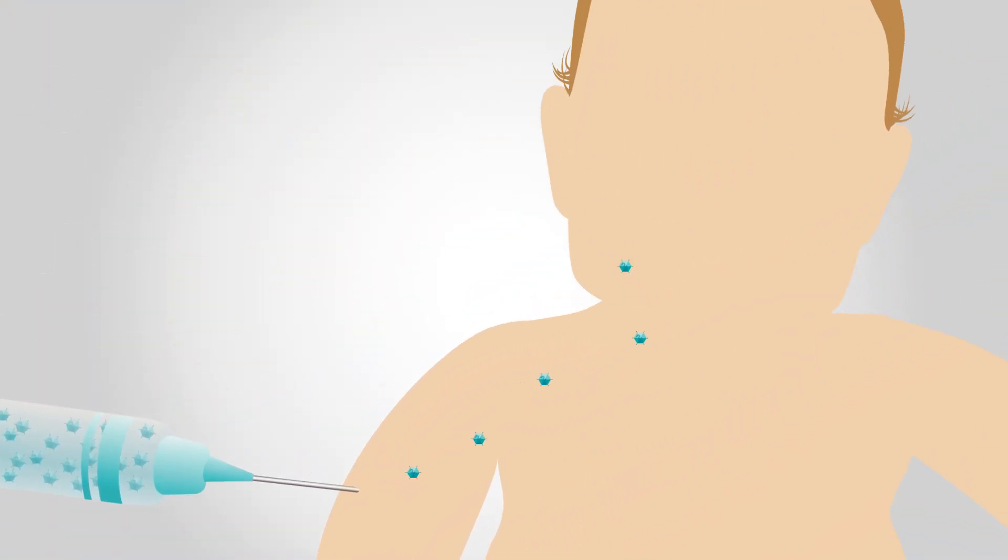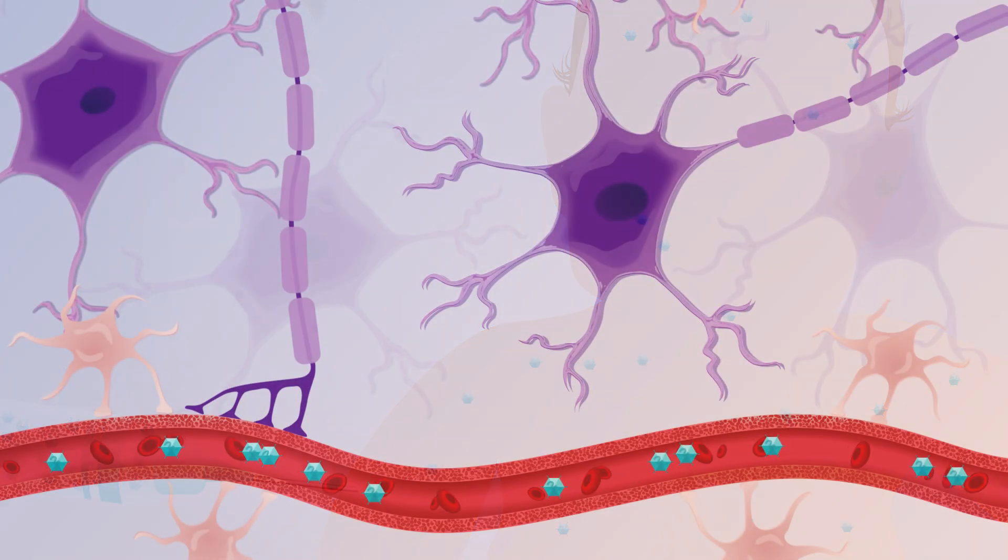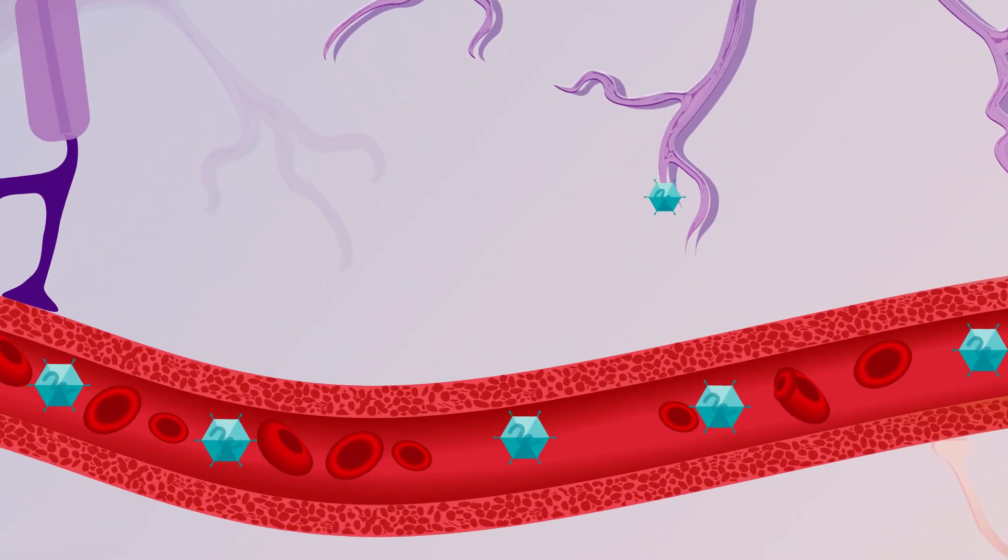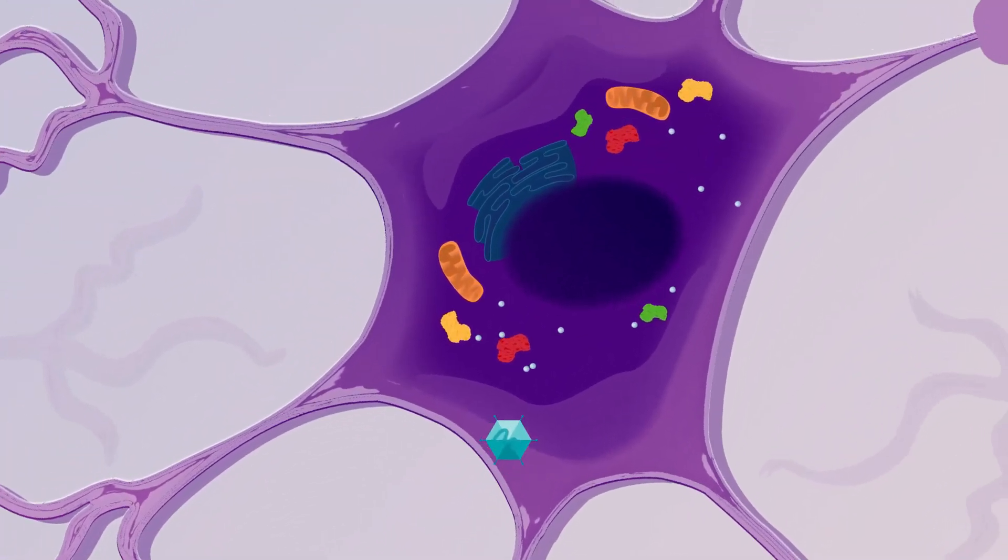When the material is injected, the viruses deliver the healthy SMN1 gene to the cells all over the body. Most importantly, they cross the blood-brain barrier to the motor neuron cells in the spinal cord.